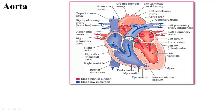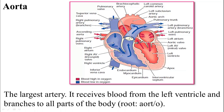Between the aorta and the left ventricle is the aortic valve. The aorta is the largest artery in the human body — it receives blood from the left ventricle and branches to all parts of the body. The aorta is a very important blood vessel. The aortic valve is a valve.